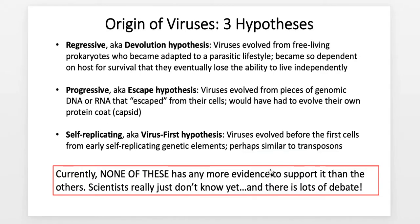Let's talk about the three hypotheses being discussed regarding the origins of viruses. The first is called the regressive hypothesis, also described as the devolution hypothesis. This idea is that viruses evolved from early free-living prokaryotes that were potentially early parasites on other prokaryotic cells. That relationship became so intertwined that the parasite became so dependent upon the host that it eventually lost the ability to live freely — basically, viruses came from pre-existing cells that over-adapted to the parasitic lifestyle.